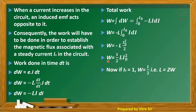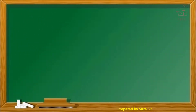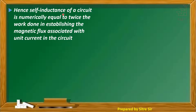If I₀ equals 1 and W equals L by 2, then L equals 2W. Hence, the self-inductance of a circuit is numerically equal to twice the work done in establishing the magnetic flux associated with unit current in the circuit.